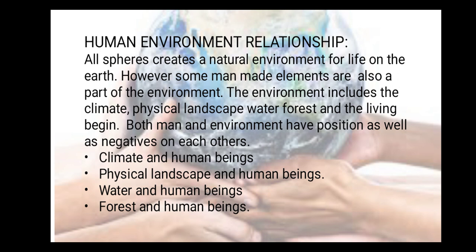The environments include climate, physical landscape, water, forests, and living beings. Both man and environment have positive as well as negative effects on each other. Number one: climate and human beings. Number two: physical landscape and human beings. Number three: water and human beings. Number four: forests and human beings. Today we are going to study what kind of relationship humans have with their environment.